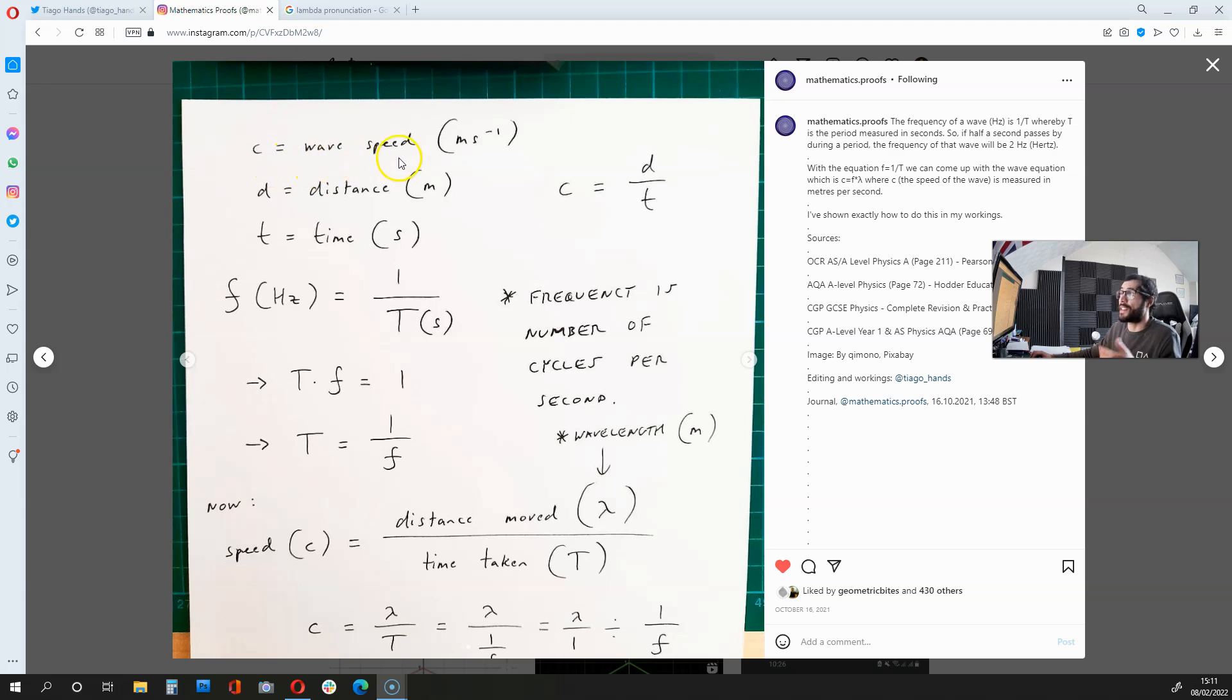which is the wave speed measured in meters per second, and we keep distance as meters, and time as seconds. So, with this over here, we get c equals d over t, which is very similar to the speed equation.